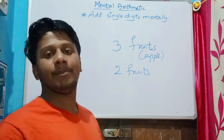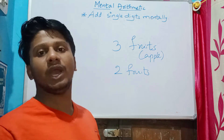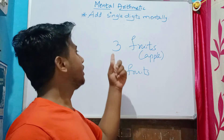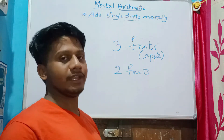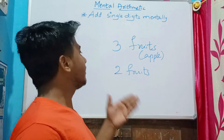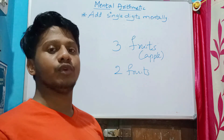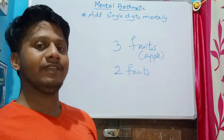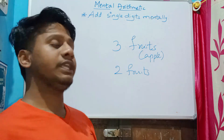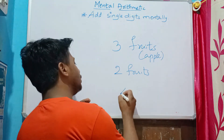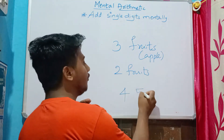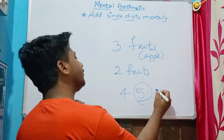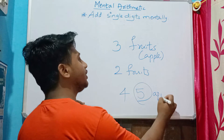Now how many apples do you have? You had three apples, then someone comes and gives you two more. So think: three, then after three you get two more — that is four, five. So now you have five apples with you.